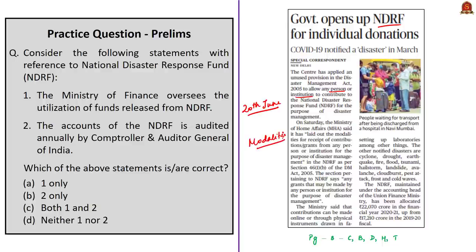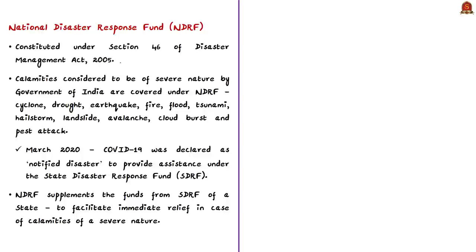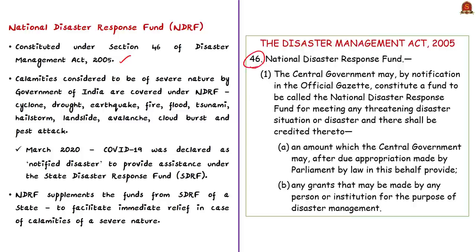NDRF is a fund constituted as per Section 46 of the Disaster Management Act of 2005. Generally, calamities considered to be of a severe nature by the Government of India are covered under NDRF. These include natural calamities such as cyclone, drought, earthquake, fire, floods, tsunamis, hailstorms, landslides, avalanches, cloudbursts, and pest attacks. In March 2020, COVID-19 was declared a notified disaster to provide assistance under the State Disaster Response Fund. NDRF supplements funds from the SDRF of a state to facilitate immediate relief in case of severe calamities.